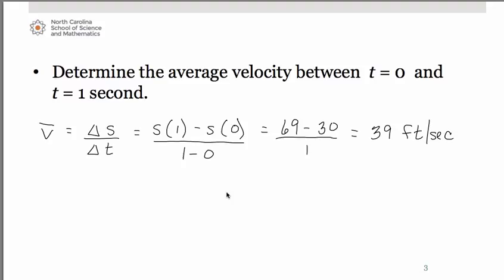Now let's talk about the fact that this came out as a positive value. Since we have a positive 39, that tells us that the motion of the ball is still upward in between zero and one seconds. Let's take a look at the graph really quick.